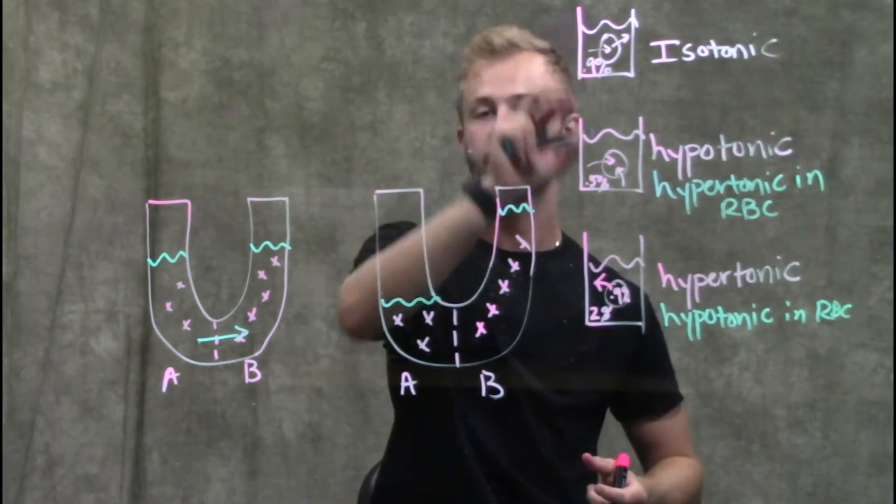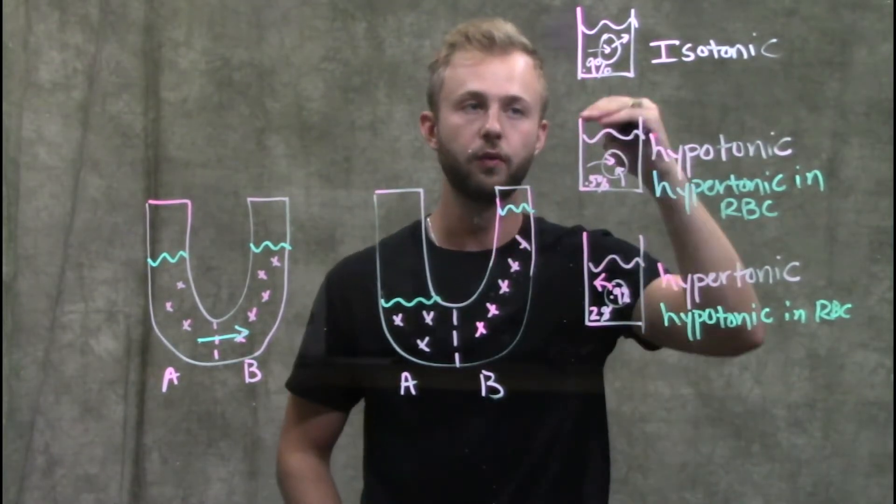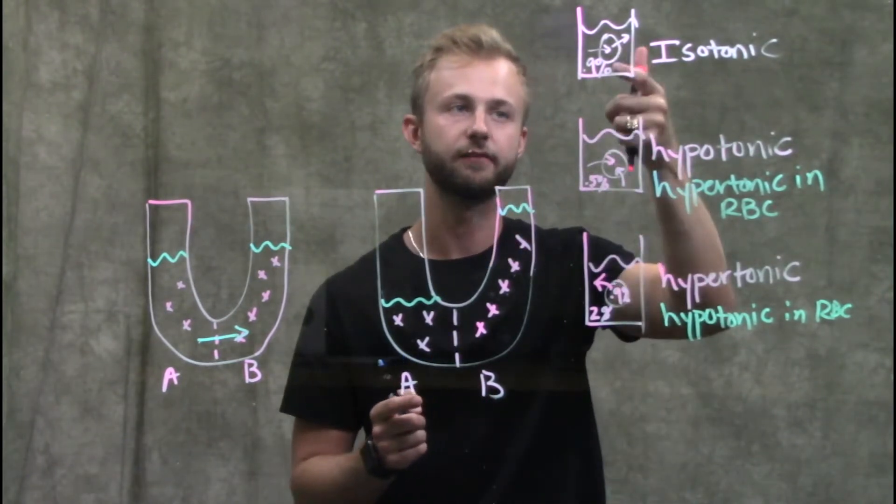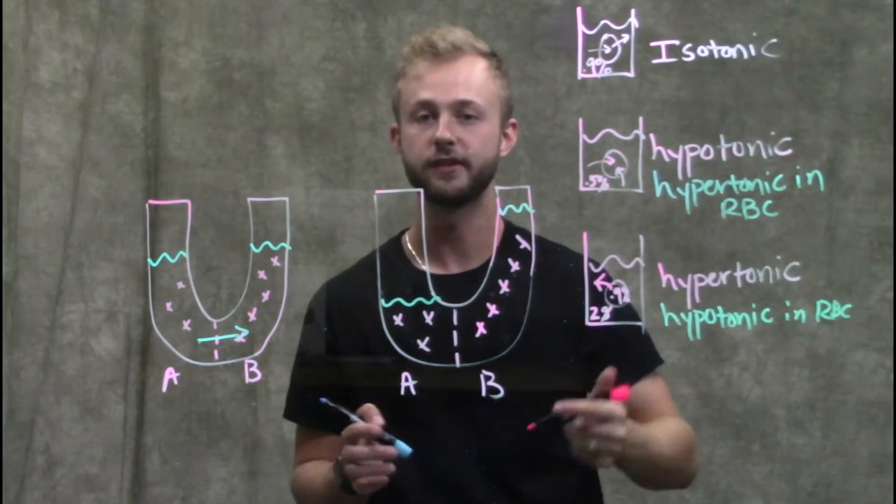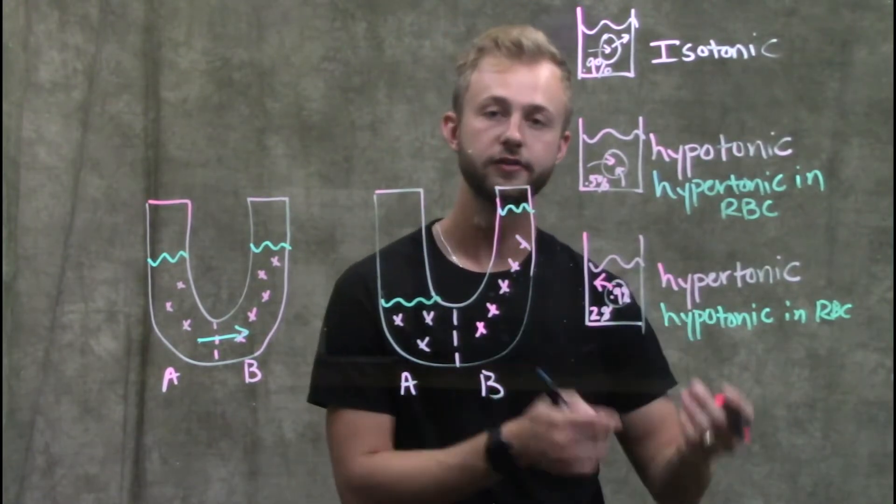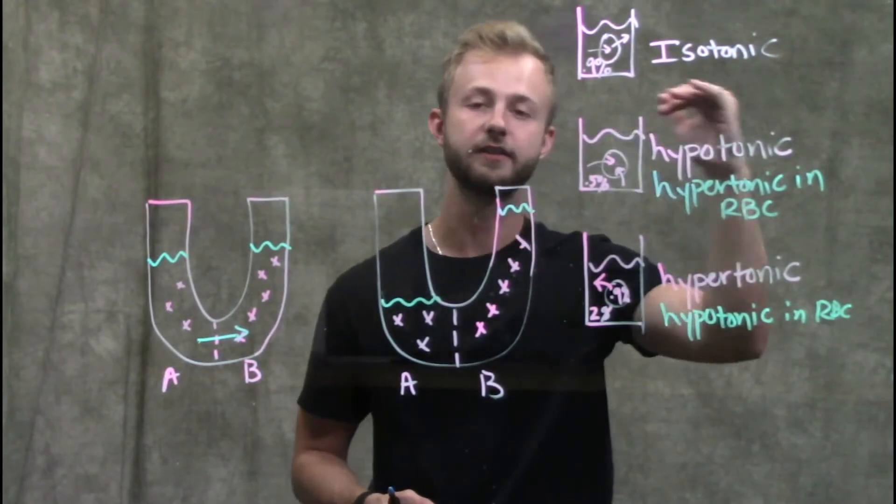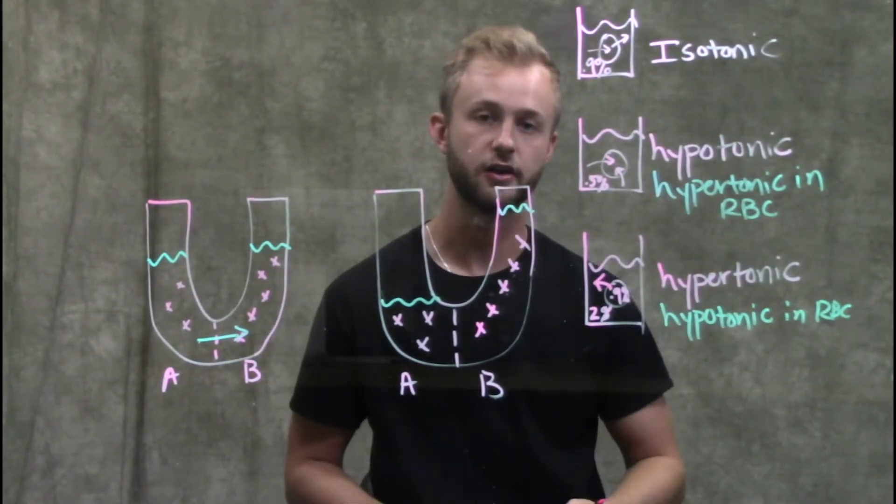In this situation, there's really only one way to look at this because the solutions are both isotonic. You can still say the inside of the red blood cell is isotonic to the solution or the solution's isotonic to the inside of the red blood cell, but there's not a different term that we can use in this scenario.